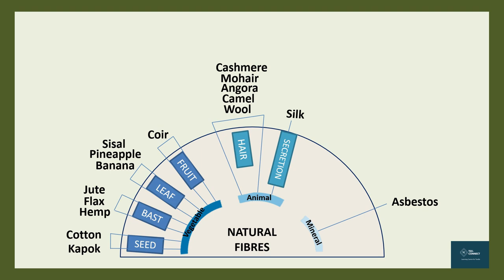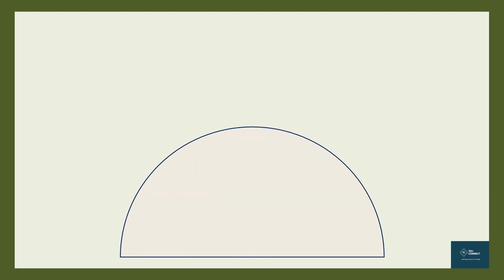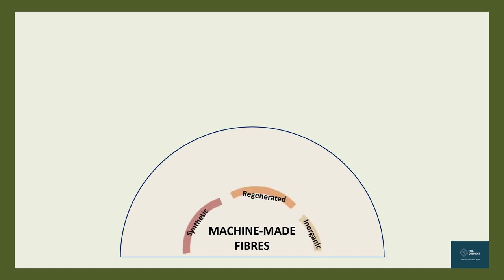Now let us move on to the machine-made fibers, which are divided into three categories: synthetic fibers, regenerated fibers, and inorganic fibers. From World War II onwards, there has been a thrust to produce synthetic materials mostly derived from petrochemicals, and the textile industry saw a rise of synthetic fibers during that same time. Nylon was the first synthetic fiber available to the public, around the 1930s.